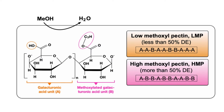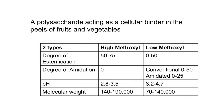There are two types of pectin: high-methoxyl pectin and low-methoxyl pectin. The technological classification of pectin is based on the degree of methylation.